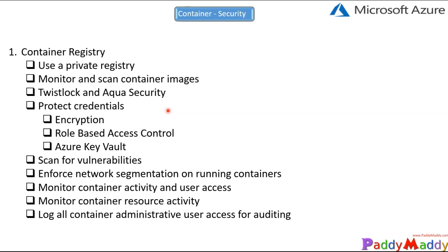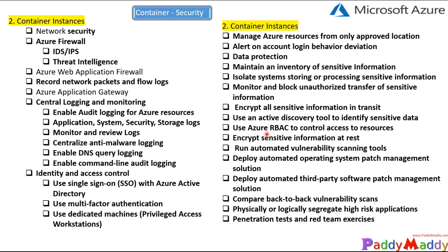You can use monitoring options such as Azure Monitor for containers, and also use other container monitoring solutions, so that you can check the entire flow by integrating your metrics within your API or dashboard. Once you are completely monitoring your containers and their activities — including user access and what actions they are performing — that makes it easy to understand what's going on within your Docker environments or container registries. You can also monitor container resource activity and log all possible container administrative user access for auditing purposes. That concludes the container registry high-level security considerations.